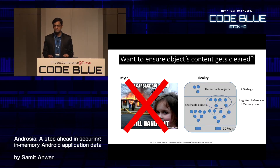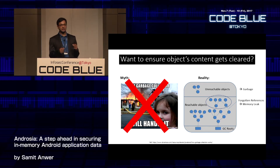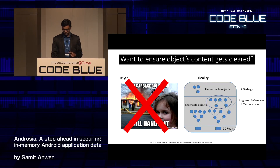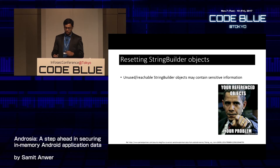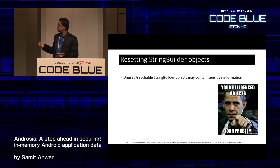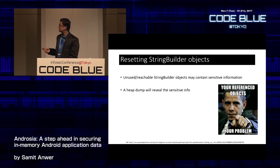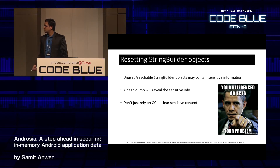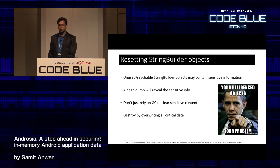Our tool figures out where the last use of objects is happening and clears memory contents at that point. Our tool specifically targets StringBuilder objects since strings are immutable. StringBuilder objects may contain sensitive information revealed by a heap dump, so don't rely on the garbage collector — destroy by overwriting all critical data.